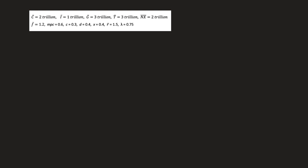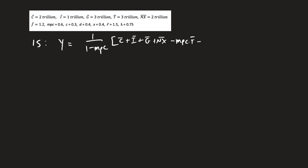For the IS curve, we know that Y equals 1 over (1 minus MPC), and this is something you need to make sure you know. That multiplier is times C-bar, I-bar, G-bar, and X-bar — that's autonomous expenditure — minus MPC times T-bar, minus D times F-bar. Since the IS curve is downward sloping, there's a minus sign, and then you have C plus D plus X — those are all our response variables — divided by (1 minus MPC), times R.